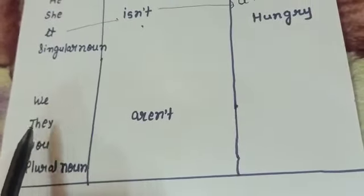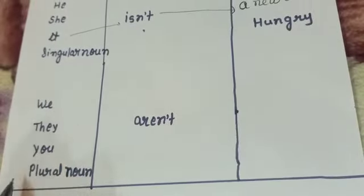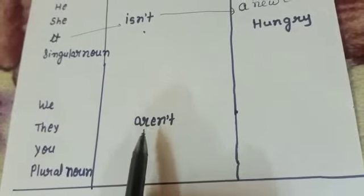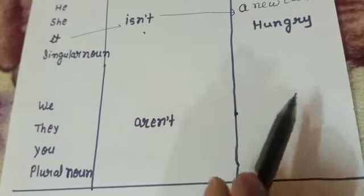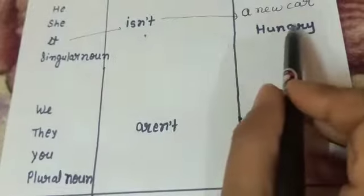So for we, they, you and all plural nouns, we use aren't. So look here. We are not hungry.